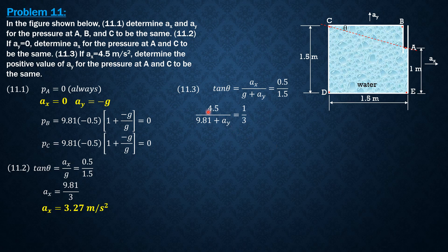So AX is given, 4.5 over 9.81 plus AY equals 1 over 3. So therefore, AY is 3 times 4.5 minus 9.81. And that is 3.69 meters per second squared. So that's it for this problem.